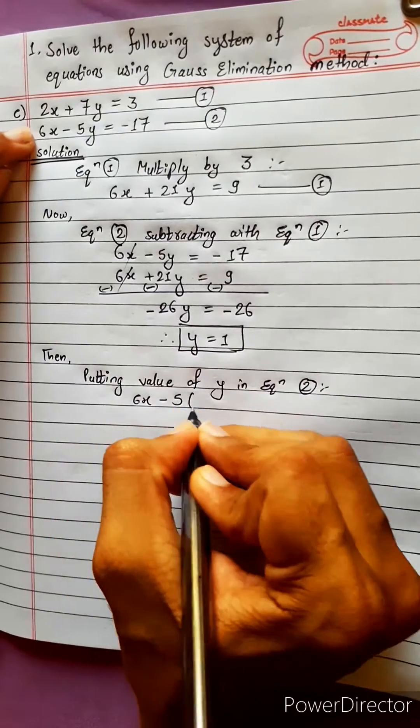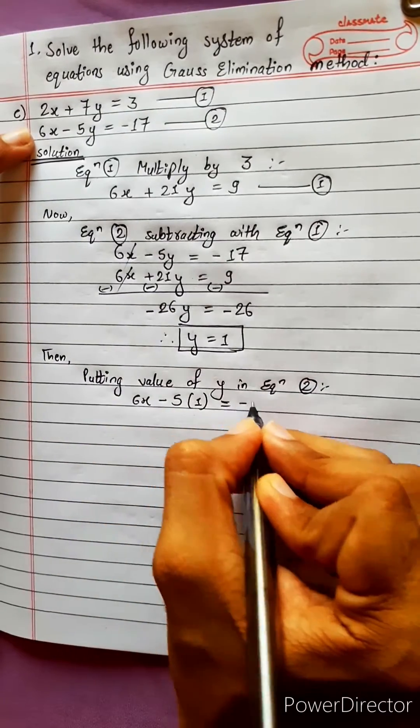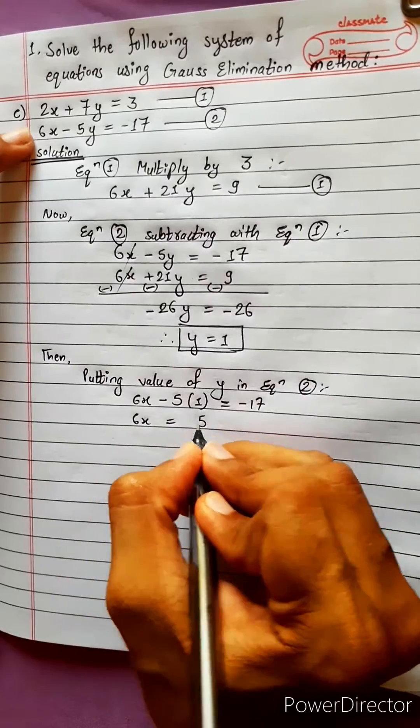6x minus 5 into 1 equals minus 17. 6x equals 5 minus 17.